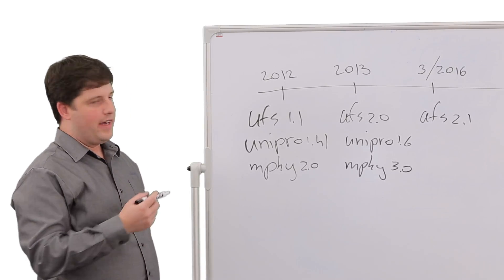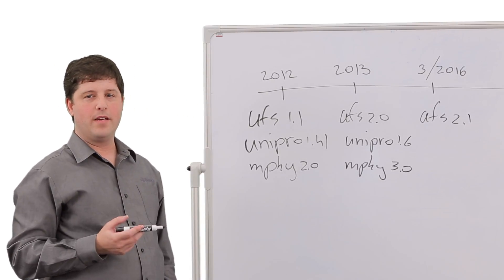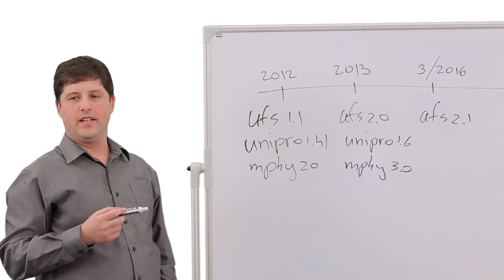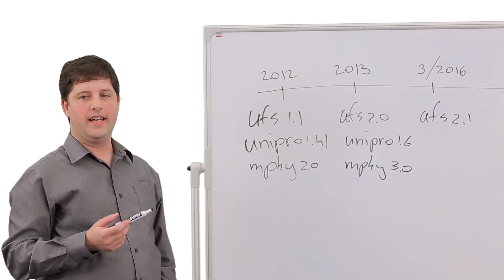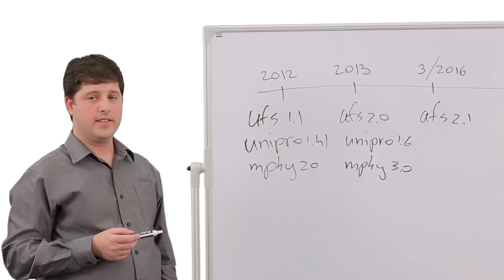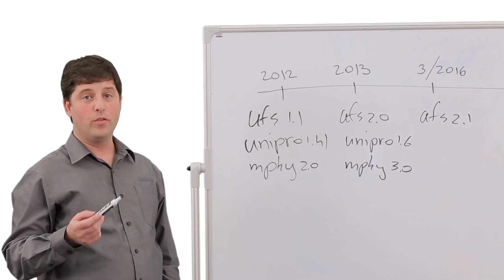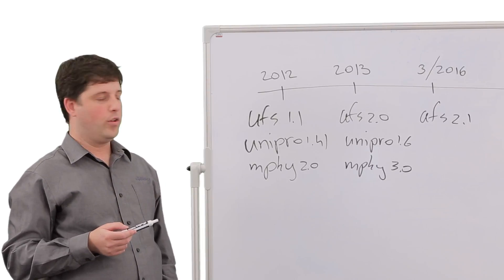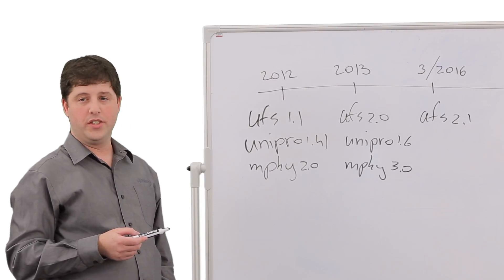By using Mphi and Unipro as the transport layer of UFS, UFS is able to provide high-performance serial interface, low power consumption, EMI, and multi-lane scalability. UFS is also using the proven SCSI architecture and provides command queuing and asynchronous and concurrent operations.